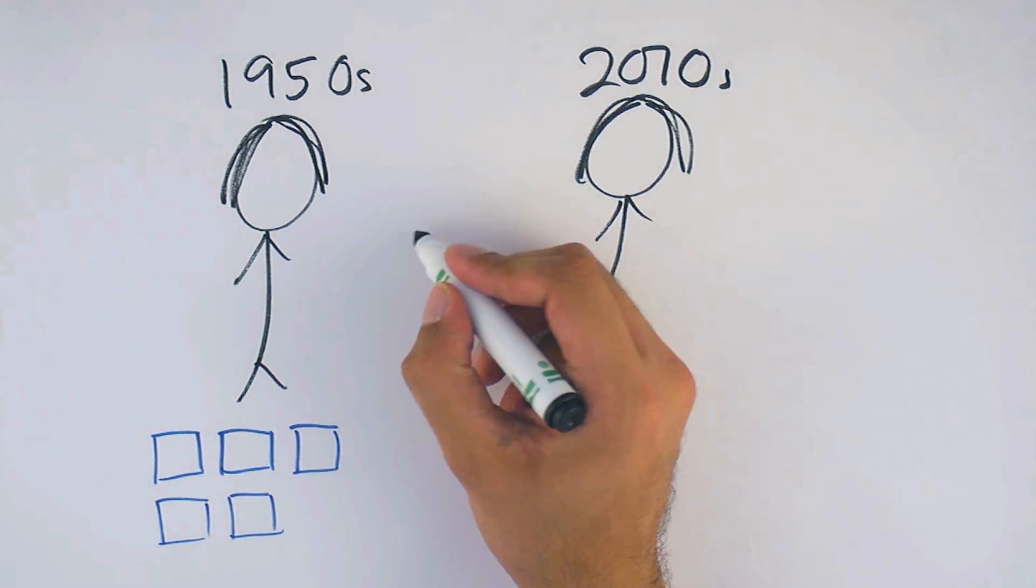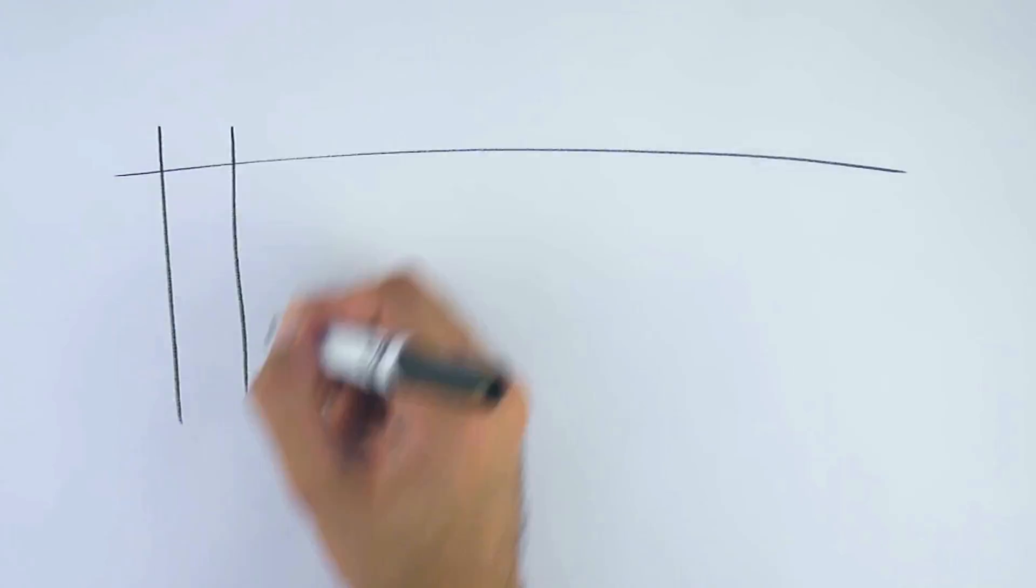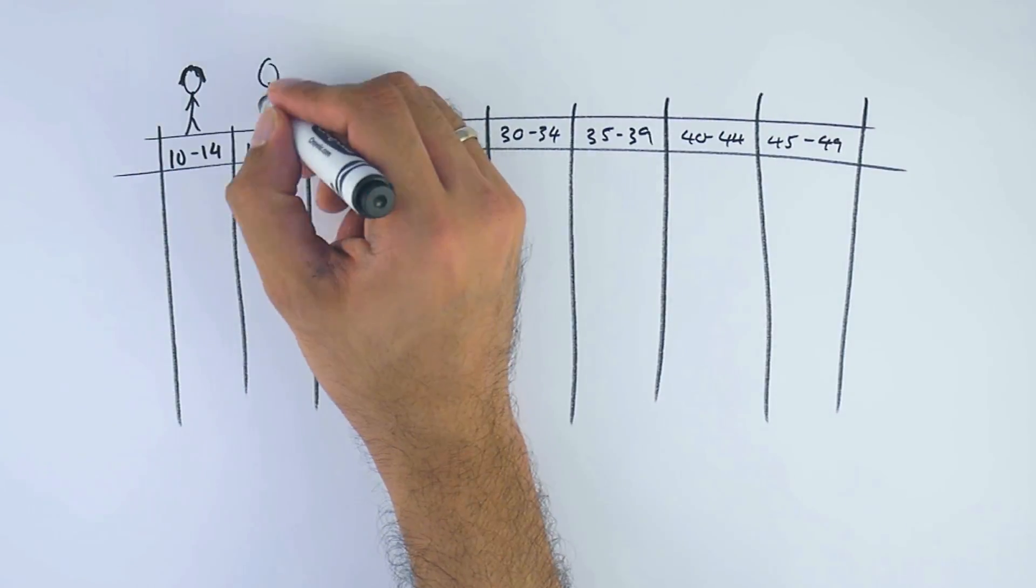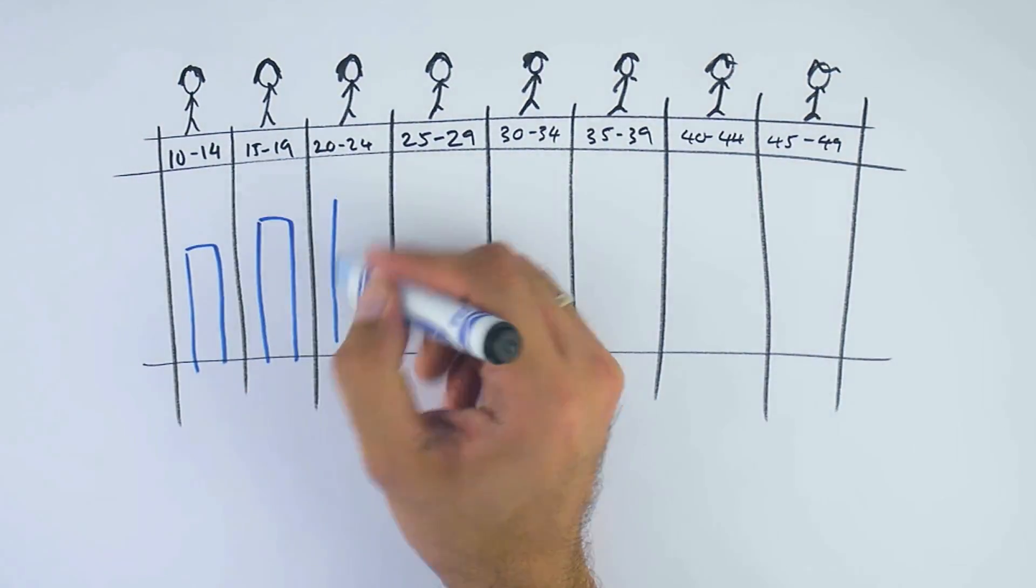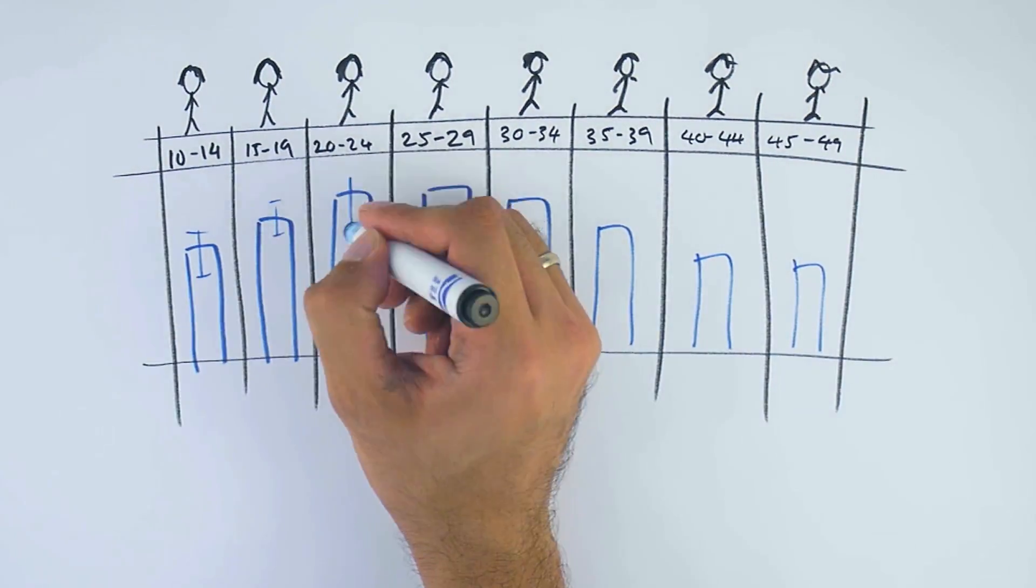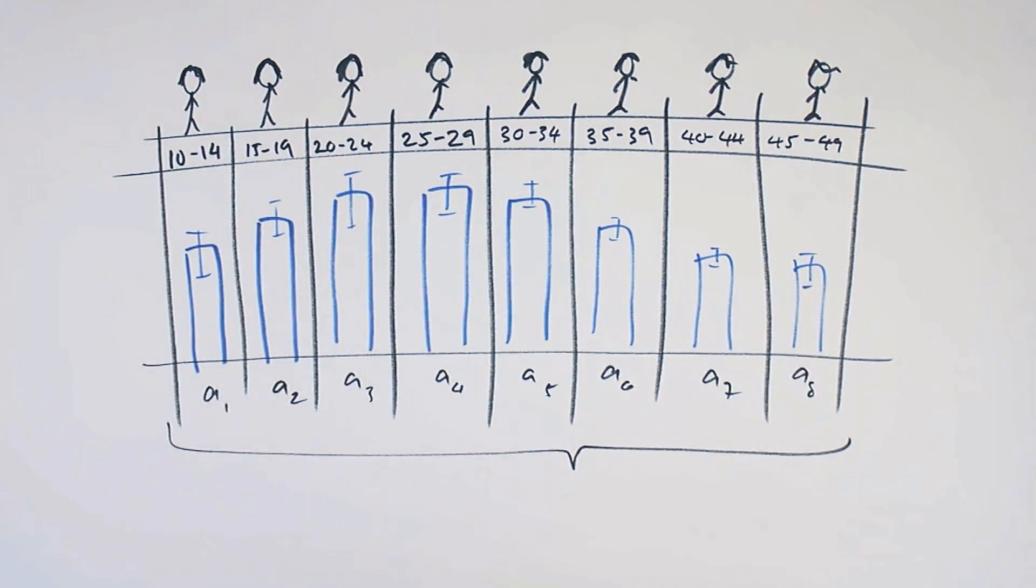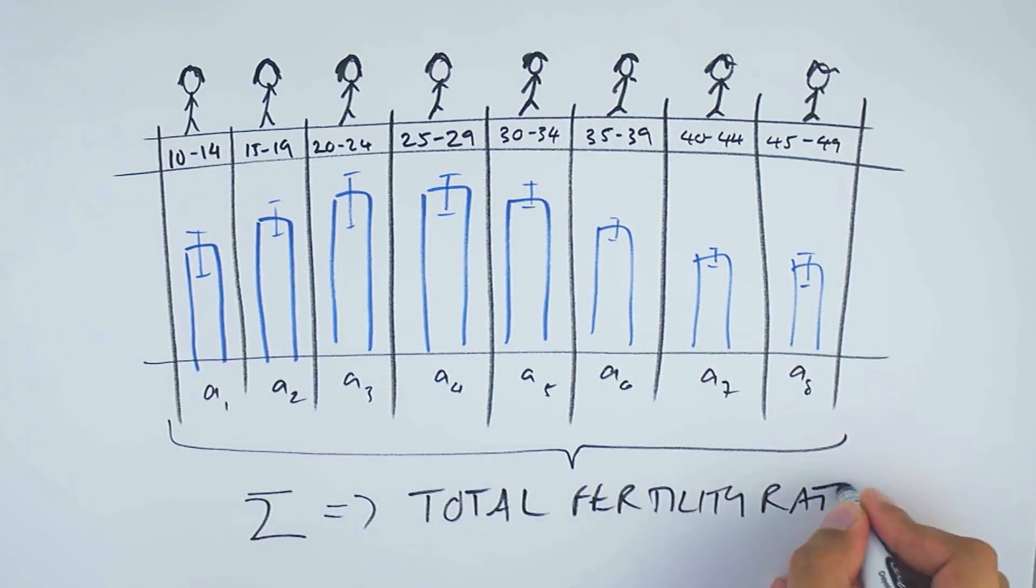But how do we know this and what does it tell us? Statisticians take household survey and census data from countries and look at how many children women of various ages reported they had. With this data they calculate age-specific fertility rates for women of different ages and then combine these data for a given year in a country to calculate the total fertility rate.